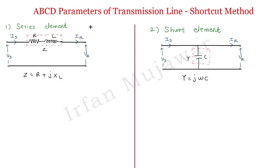Hello everyone. Today we will study how to find the ABCD parameters of a transmission line using a shortcut method, which is a quicker way to find the ABCD parameters. In previous videos we have seen how to calculate the ABCD parameters of various lines including short line, medium line — end condenser method, nominal T method, and nominal pi method — using Kirchhoff's current law, Kirchhoff's voltage law, simplification. Today we study the shortcut way.